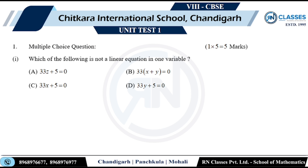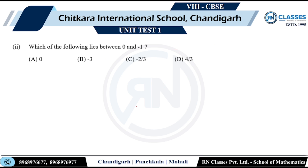Multiple choice questions — one mark each, five questions, five marks are yours. Question number one, part one: Which of the following is not a linear equation? Linear equation in one variable — one variable means just one variable. Looking at the options, 33z plus five is equal to zero — that has only one variable. A is the right answer. It's that simple guys.